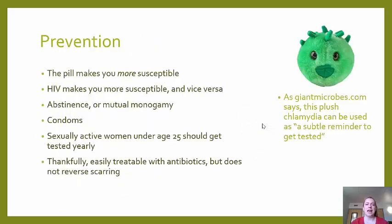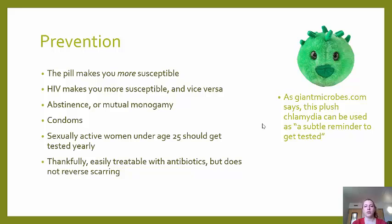Prevention: taking a birth control pill actually makes you more susceptible to the disease, and HIV also increases susceptibility — and this disease in turn makes you more susceptible to HIV. The best ways to prevent infection are abstinence or mutual monogamy, where both partners agree not to have sex with anyone else. If having sex with multiple partners, use condoms. Even with condom use, sexually active women under 25 are recommended to get tested yearly.